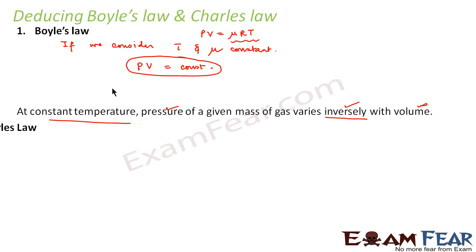Now let us look at Charles' law. It states that if P is considered constant. Now if we consider the scenario where pressure is constant, in that case, what happens to our perfect gas equation? The perfect gas equation is PV is equal to μRT. Now I say that pressure is constant.